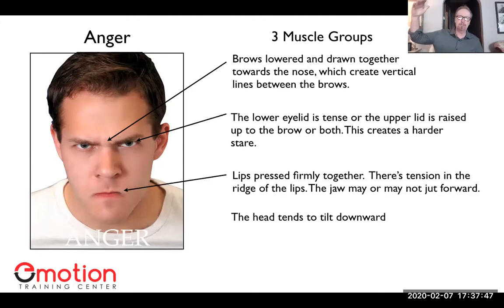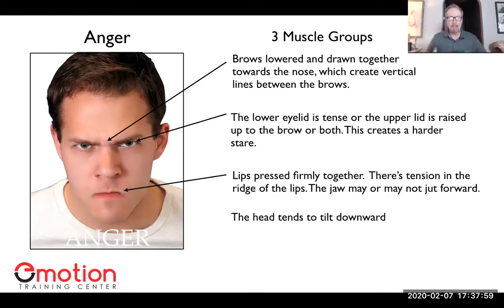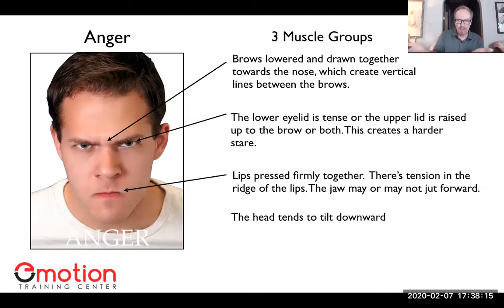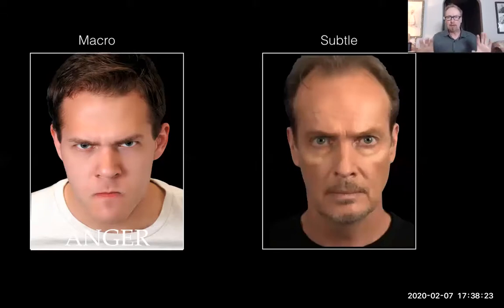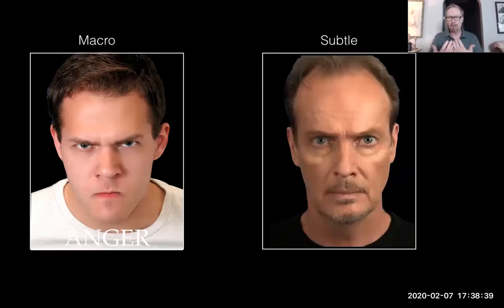Looking at anger up close, you can see the three muscle groups — there may be another that tilts the head forward. These muscle groups belong to anger. You don't need all three, but here's what's important: the more muscle groups that come in, the more intense the expression. The fewer muscle groups, the less intense the expression — but taking away expression doesn't mean you're feeling less. It means you've modified it. However, if the inner intensity isn't growing, you won't have the impulse or thoughts connected to that emotion.